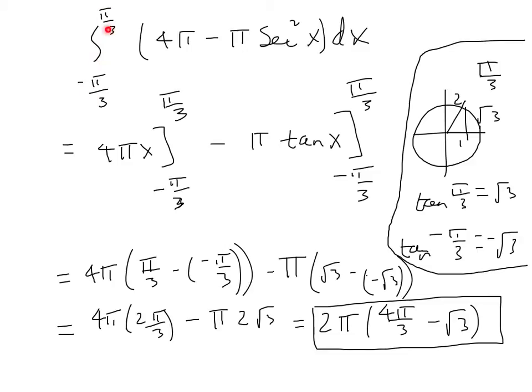So our integral then that we're going to need to evaluate will be from minus pi over 3 to pi over 3, 4 pi, the outer radius, minus pi secant square x, the inner radius, times the thickness dx. And then we just evaluate that. So we have 4 pi x from minus pi over 3 to pi over 3, minus pi tangent x from minus pi over 3 to pi over 3.